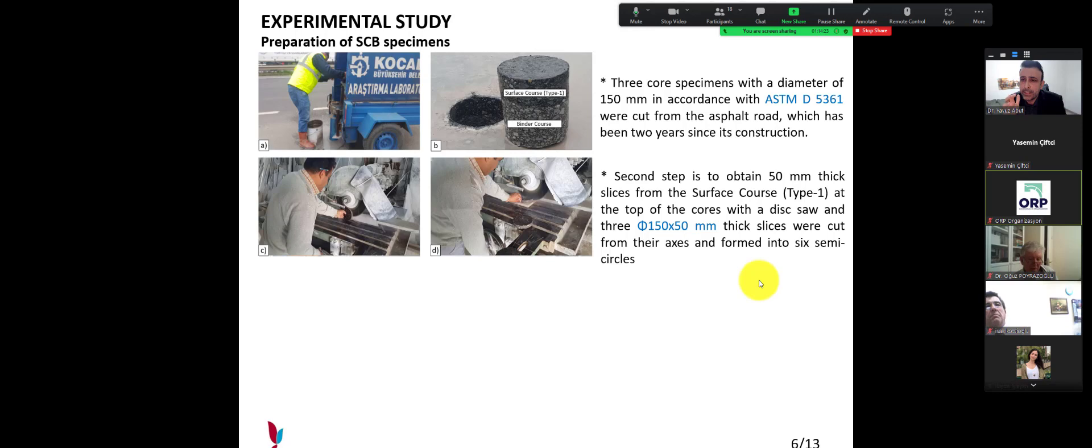The second part is about slices: to obtain 15 mm thick slices from the surface cores at the top of the cores with a disc saw. You can see the disc saw. Three 15 mm thick slices were cut from the axis and formed into six semi-circles.